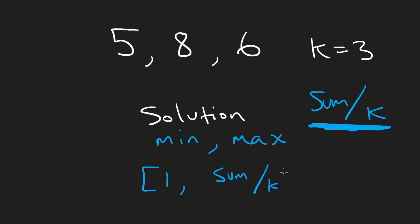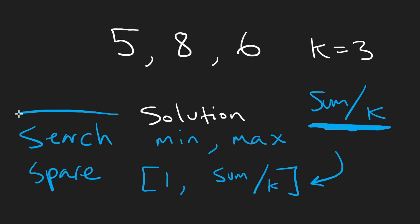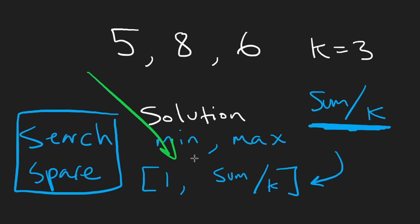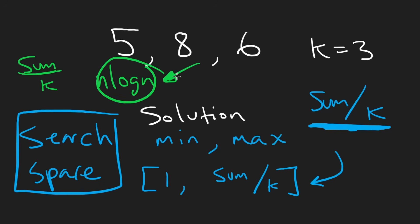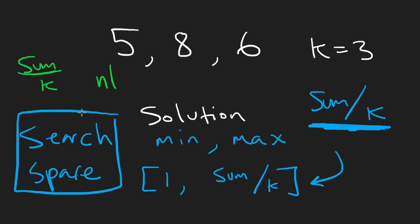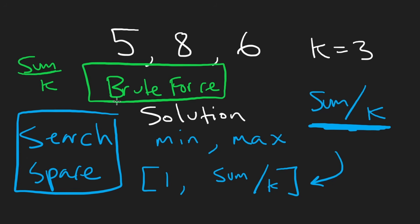If we can run binary search on this space, we'd solve the problem in O(log(sum/K)) binary search steps. But to verify if a candidate answer is correct, we need a brute-force scan — that's O(N). So the total time complexity would be O(N log(sum/K)). And this is just a pattern I've learned; I didn't invent it — I learned it just like you might be learning it today.